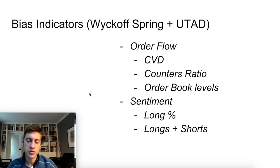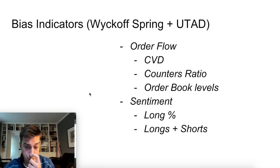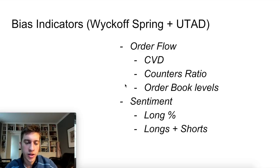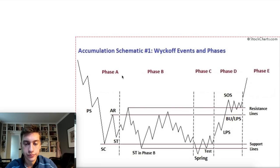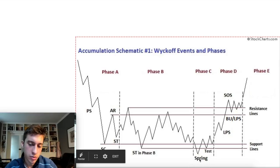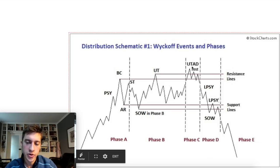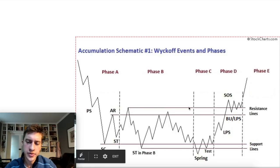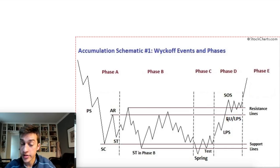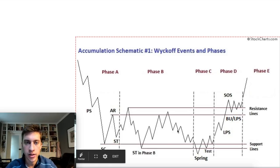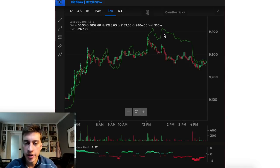I found that bias indicators work quite well with Wyckoff trading. Bias indicators are order flow and sentiment - looking at what the retail crowd believes is going to happen to the market, where typically the opposite tends to happen. Tensorcharts.com provides order flow that's quite powerful, and we're going to be looking at three different types of analysis within order flow that can combine with Wyckoff trading. We're talking mostly about the spring, sometimes the secondary test, the UTAD, and the up thrust - but order flow is more meant to help with extremes and potential reversals.